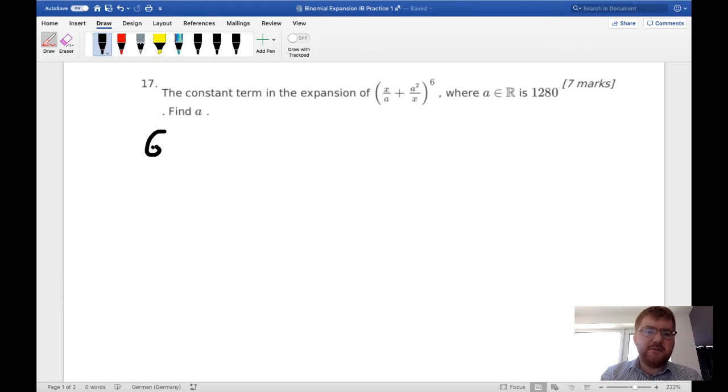So we are looking for a particular term in the binomial expansion that gives us a constant term. So as a reminder, if we take 6 choose something, we do not know what something is, so I'm going to put R.